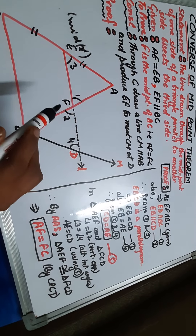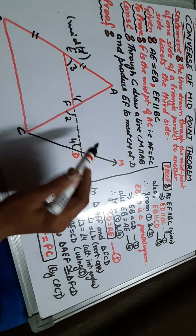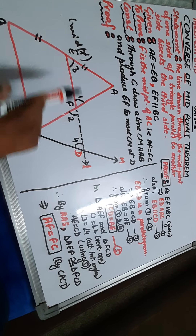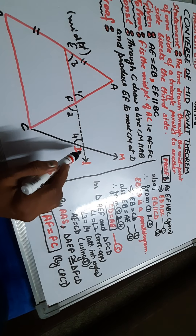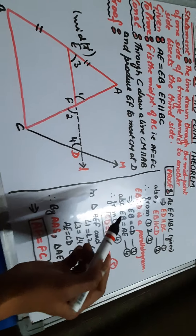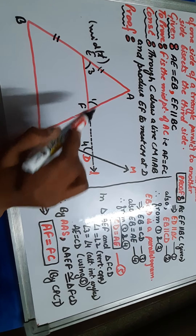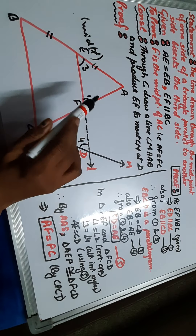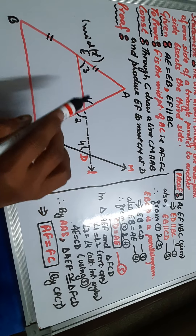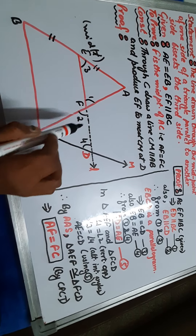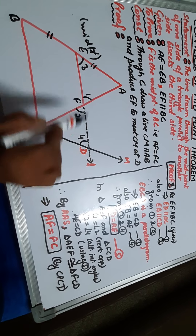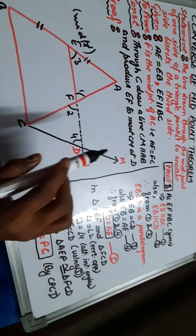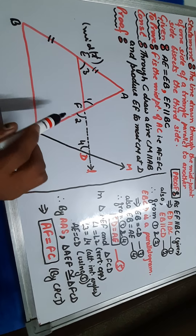For construction, as we have done for the midpoint theorem, we will make the same construction for this theorem also. Through C, draw a line CM parallel to AB, and produce EF to meet line CM at D. Now we will prove two triangles congruent. We have vertically opposite angles and alternate interior angles equal, but AAA is not a property for congruent triangles, so that is why we have done this construction.